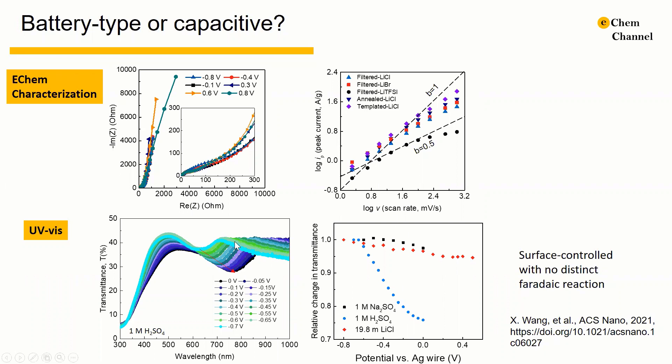All experimental evidence suggests that the separated cathodic and anodic peaks in the CV observed for titanium carbide in the water-in-salt electrolyte are not due to diffusion-limited distinct faradaic processes. Instead, surface-controlled behavior dominates the observed electrochemical response.